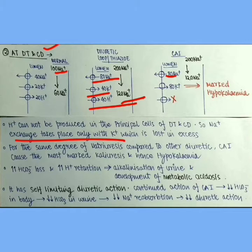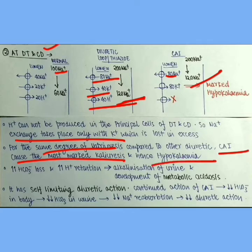That is similar sodium loss as we have seen 120 sodium. And we notice for the same degree of natriuresis compared to other diuretic, carbonic anhydrase inhibitors cause the most marked caliuresis that is potassium loss and hence most marked hypokalemia.